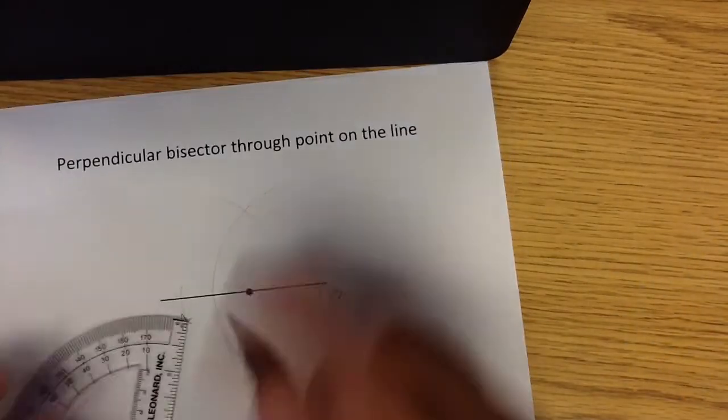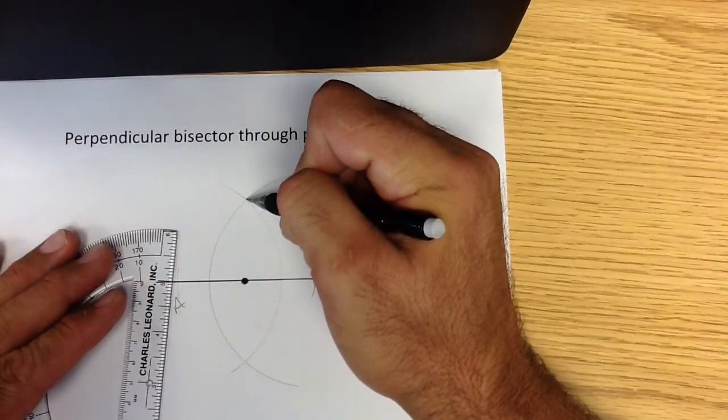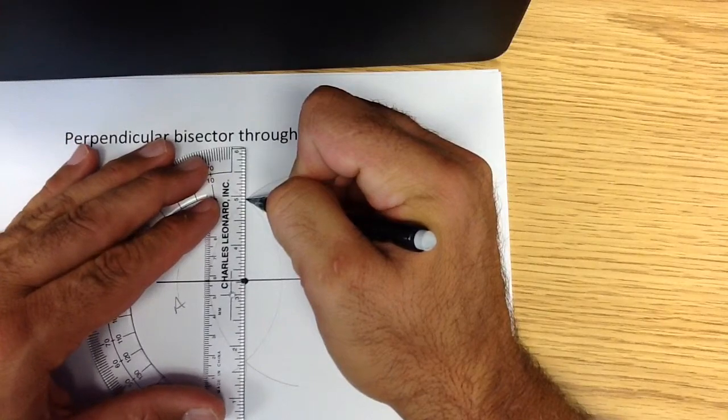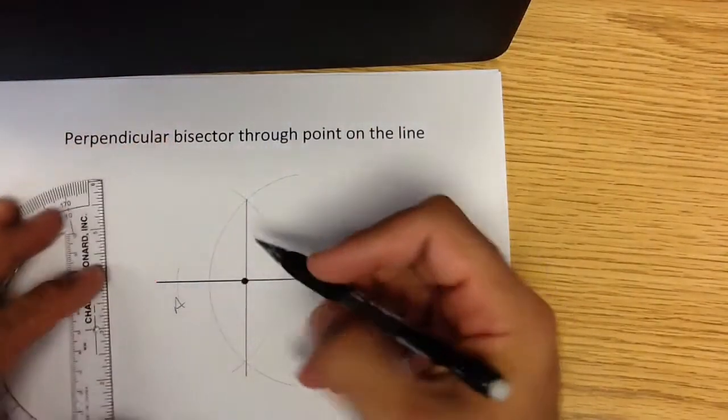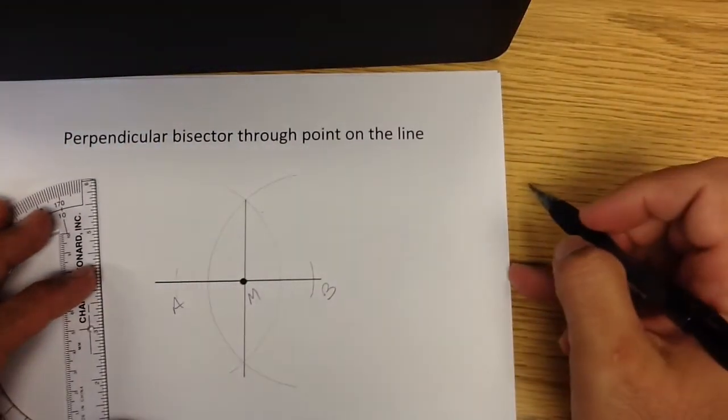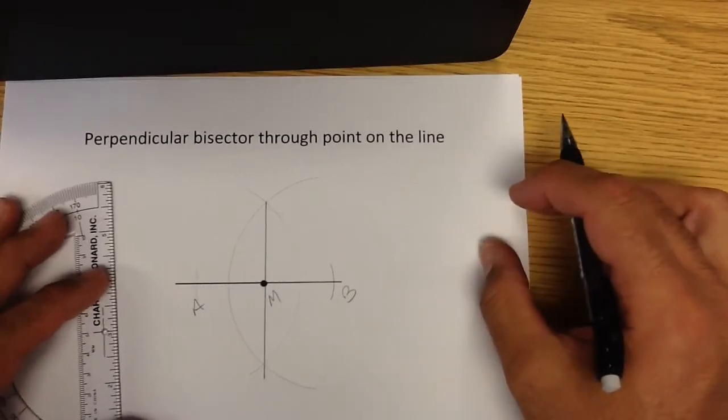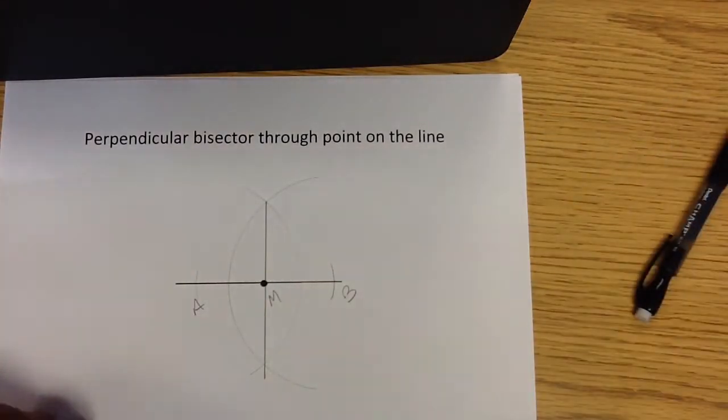Now when I have the intersection of those two arcs if I have in fact done it correctly I should be going through that midpoint in this case M. So that is another perpendicular bisector through a point on the line.